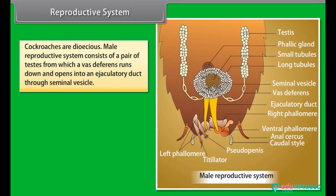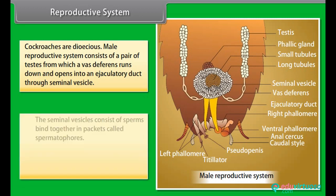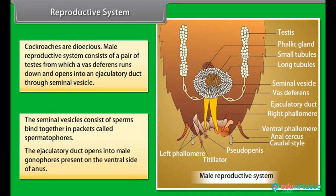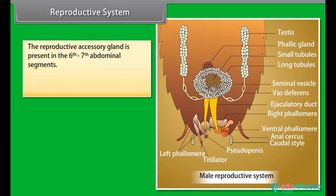Cockroaches are dioecious. The male reproductive system consists of a pair of testes, from which vasa deferentia run down and open into an ejaculatory duct through seminal vesicles. The seminal vesicles contain sperms bound together in packets called spermatophores. The ejaculatory duct opens into male gonopores present on the ventral side of the anus. The reproductive accessory gland is present in the 6th and 7th abdominal segments.